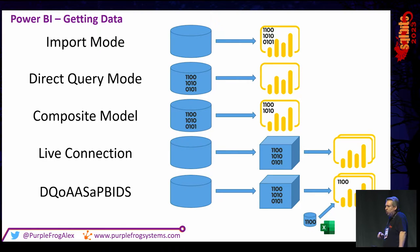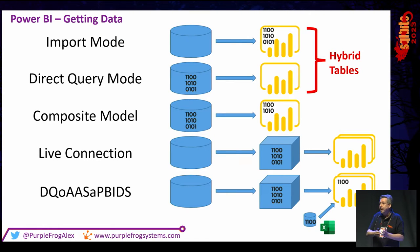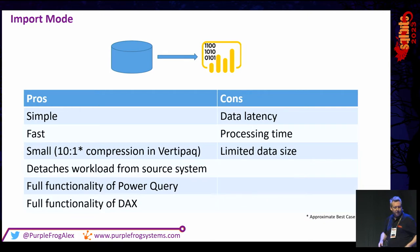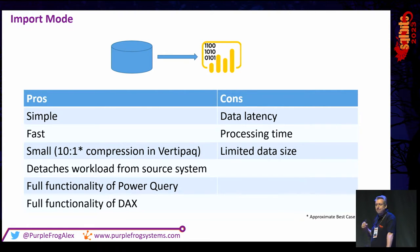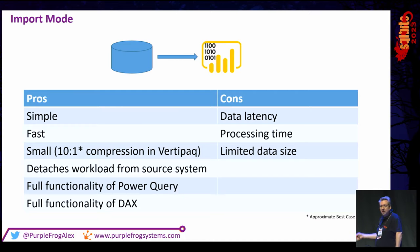Let's look at a few pros and cons. First, import mode. This is still the default best option for the majority of your datasets if you're in a simple world. For single-purpose reports, go down this route. It is simple. It is fast. All the data is compressed in the VertiPaq compression engine — about 10 to 1 — so it shrinks down massively.